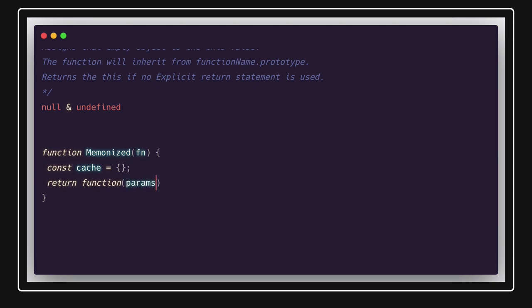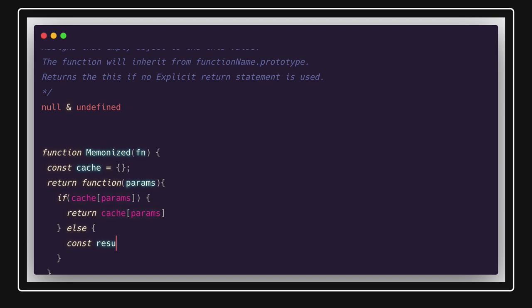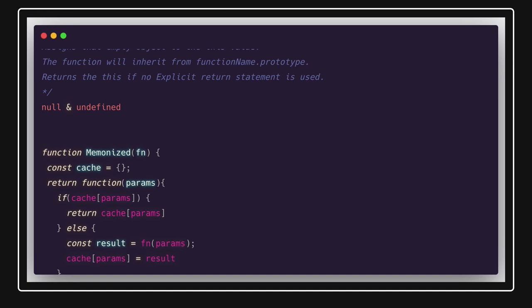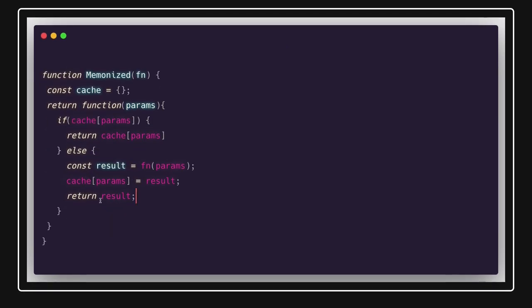The memoize function returns another inner function that takes `...params`. You'll notice the closure concept here because the inner function closes over the outer function's scope. Inside, we check if the cache already has those params — if yes, return the cached result. Otherwise, call the original function with params, store the result in cache, and return it.